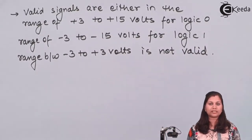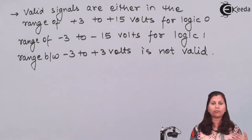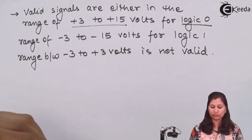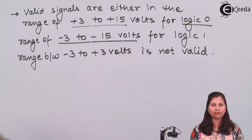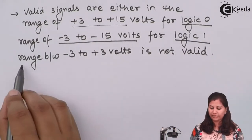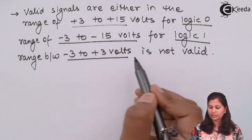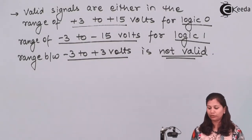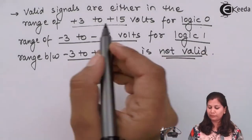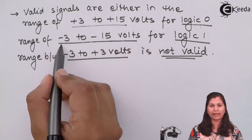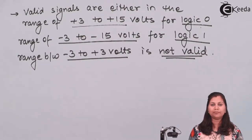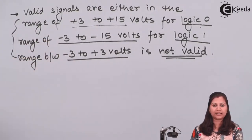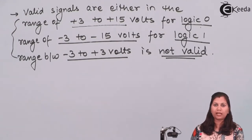The valid signal ranges are: voltages between +3 to +15 volts are treated as logic 0, voltages between -3 to -15 volts are treated as logic 1, and the range between -3 to +3 volts is not valid for RS-232. In this way, serial data is transmitted using the RS-232 communication cable.